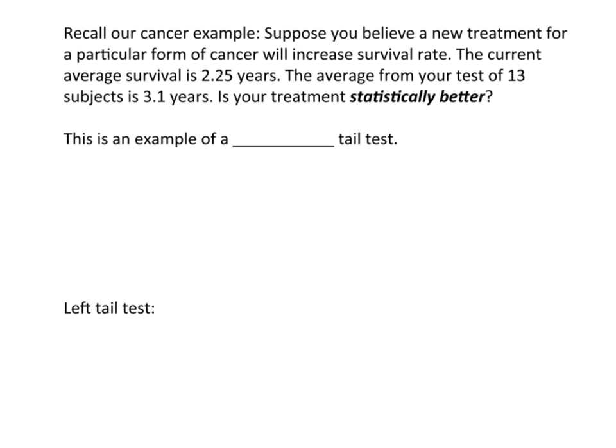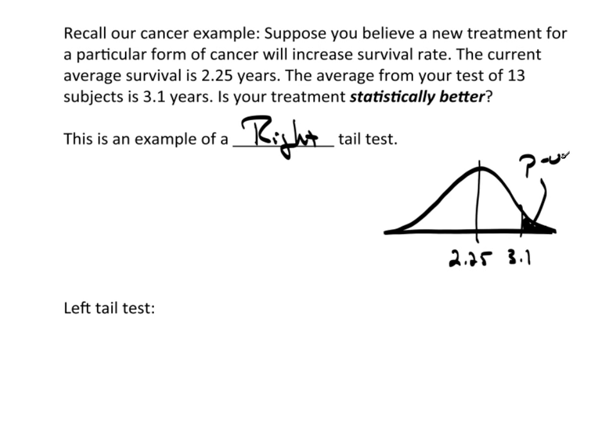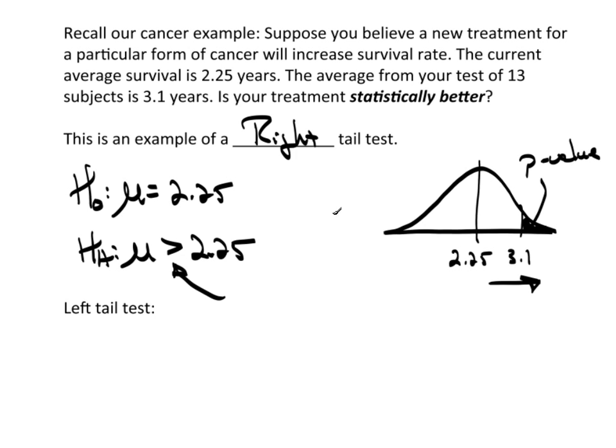Now, this is an example of a right-tailed test. And the reason being, if I draw a picture, which you should always do, the mean, we believe, is 2.25. Over here, someplace, is 3.1. And we're looking for this probability. This probability I mentioned earlier is actually the p-value. And we'll use this probability to make a decision. See, I'm going to the right. I'm looking at the right tail, hence the right-tailed test. The null hypothesis was that the mean was equal to 2.25. And the alternative hypothesis was that the mean was greater than 2.25. That greater than indicates a right-tailed test.